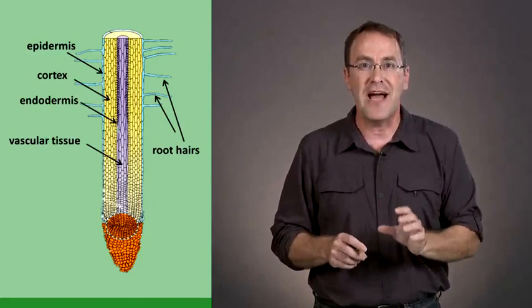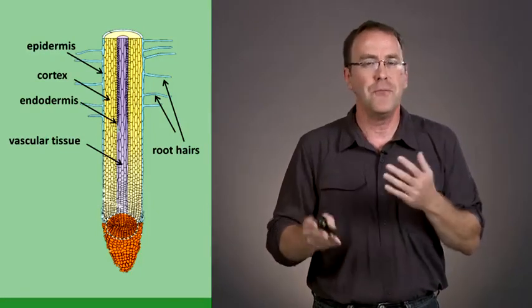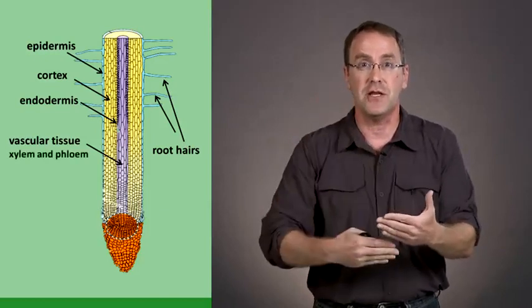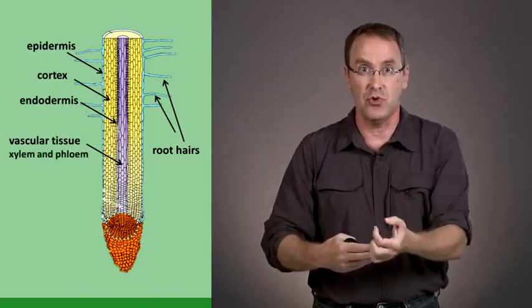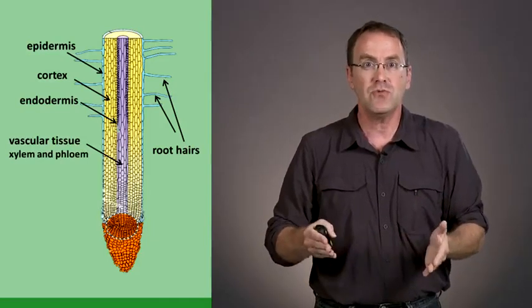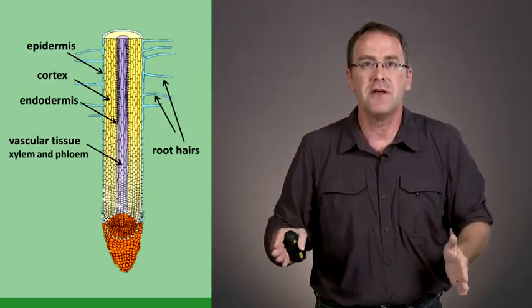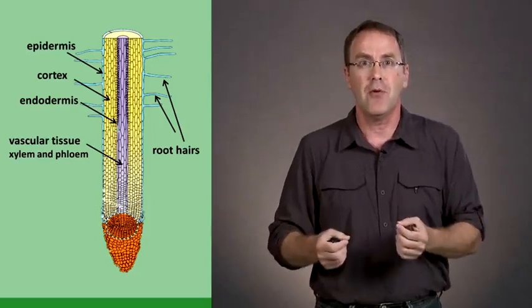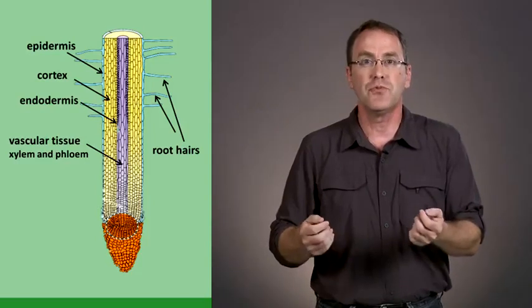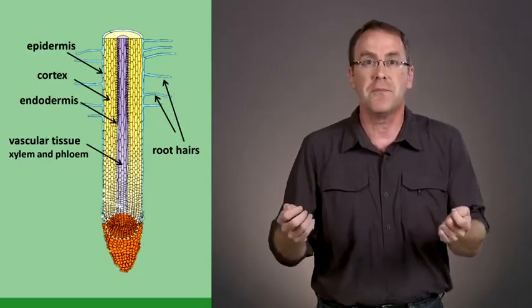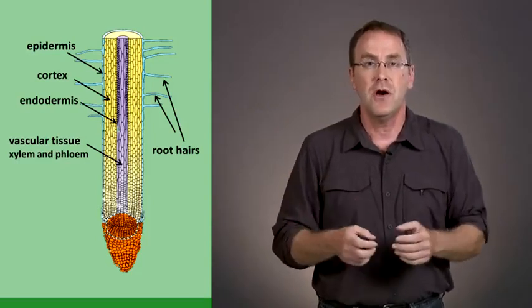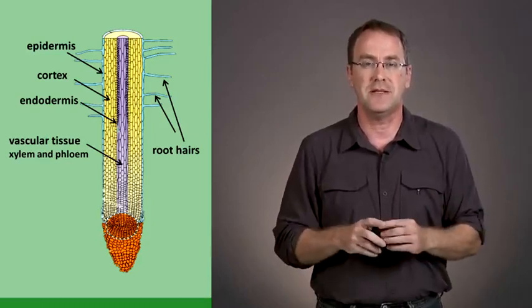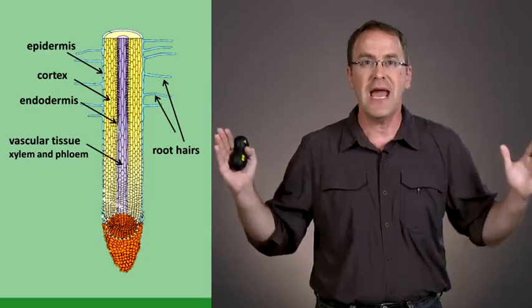In the middle of the root, we have the vascular tissue. Sometimes it's called the stele. If you cut a carrot vertically, you can see the vascular tissue in the middle. This is where we have the xylem vessels which bring water up from the root to the green part, and the phloem tubes which bring sugars from the green parts down to the root, or sometimes take sugars from the starch in the root up to the green part. So this is from the outside in.